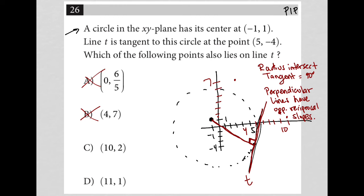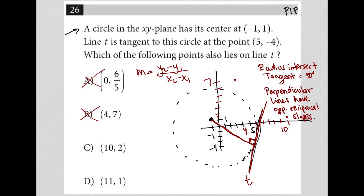I'm going to figure out the actual slope of the radius. Slope is the difference of y values divided by the difference of x values. Thinking of negative 1, 1 as x1, y1 and 5, negative 4 as x2, y2, my slope is negative 4 minus 1 over 5 minus negative 1, which gives me negative 5 over 6. So the slope of the radius is negative 5/6. That means the slope of line T, which is perpendicular to the radius, must be positive 6/5.